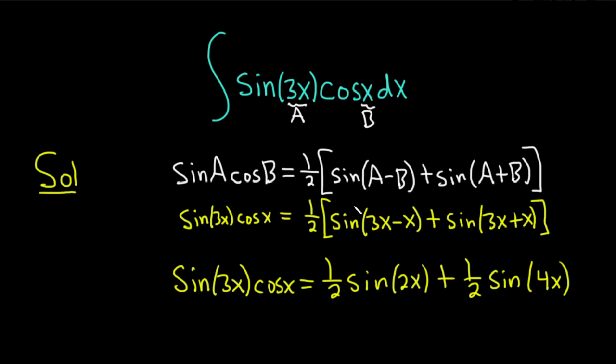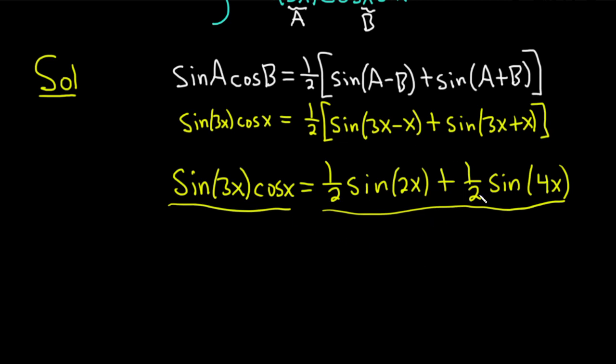So now we can go ahead and integrate this instead, right? Because our integrand is actually equal to that. So jumping to that step, basically we're just going to integrate this. We have 1 half times the integral of the sine of 2x dx.